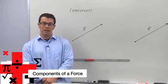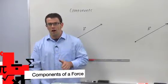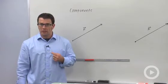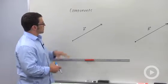I want to talk about components of a vector. Components are two vectors that add up to the given vector, which are perpendicular to each other. So let's start with an example.